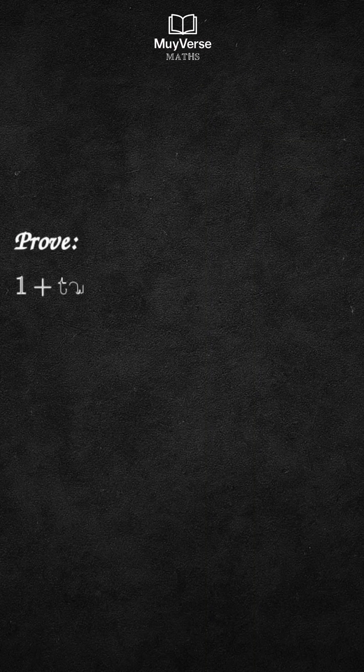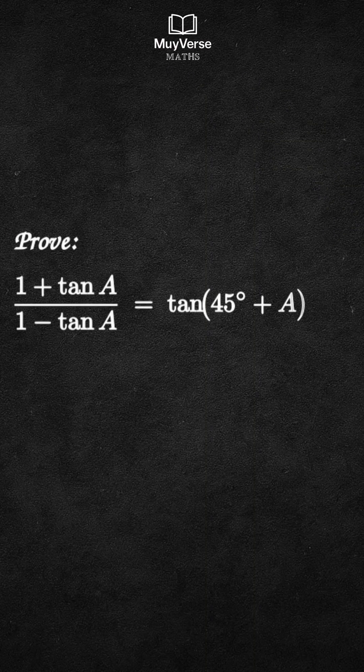We will prove, step by step, the identity: the fraction 1 plus tangent a over 1 minus tangent a equals tangent of 45 degrees plus a.